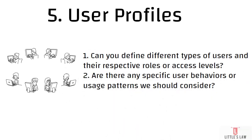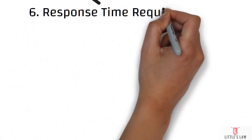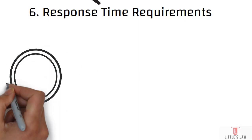The fifth question covers user profiles. You should identify the different types of users and their respective roles or access levels, because transactions differ based on user type, role, or access level. You should also understand whether there are specific user behavior or usage patterns to consider. Determine whether all user categories apply to all transactions, or whether specific users map to specific transactions.